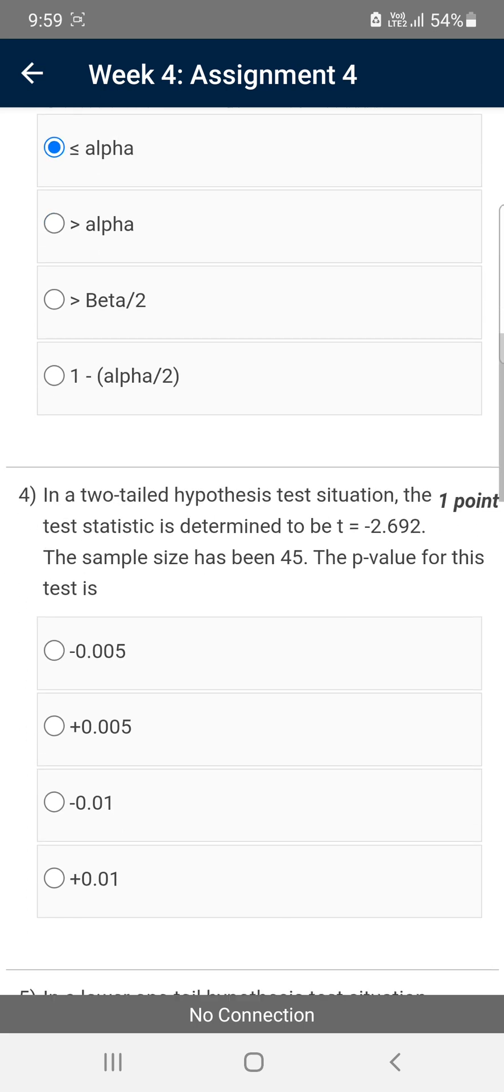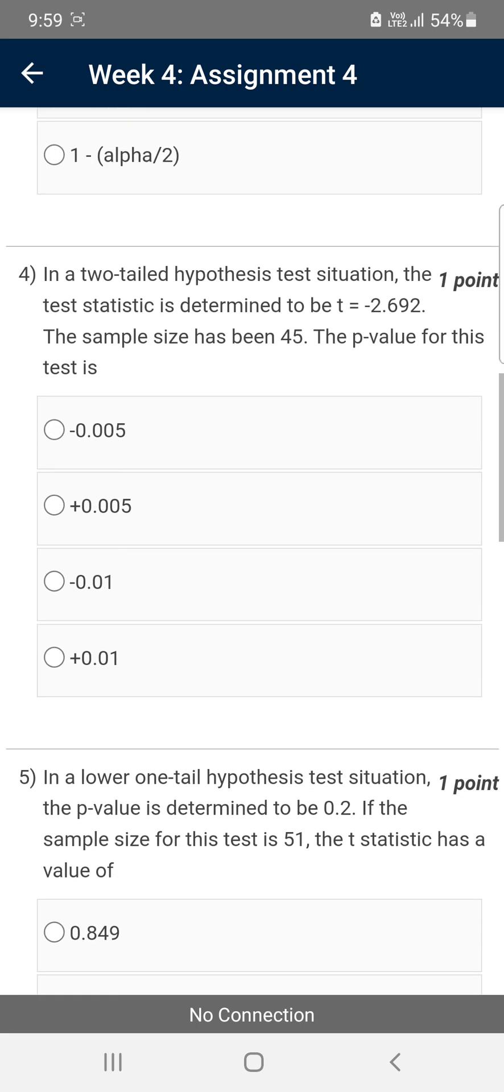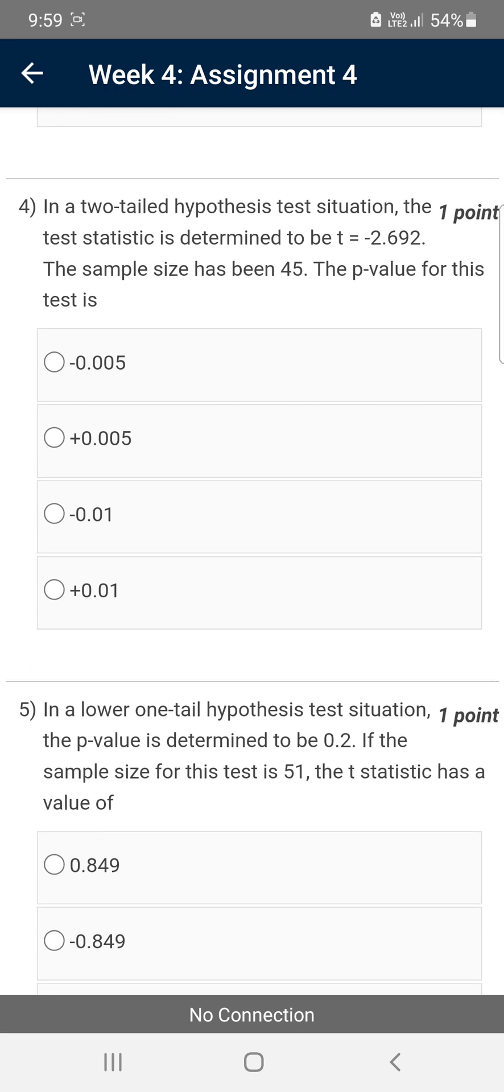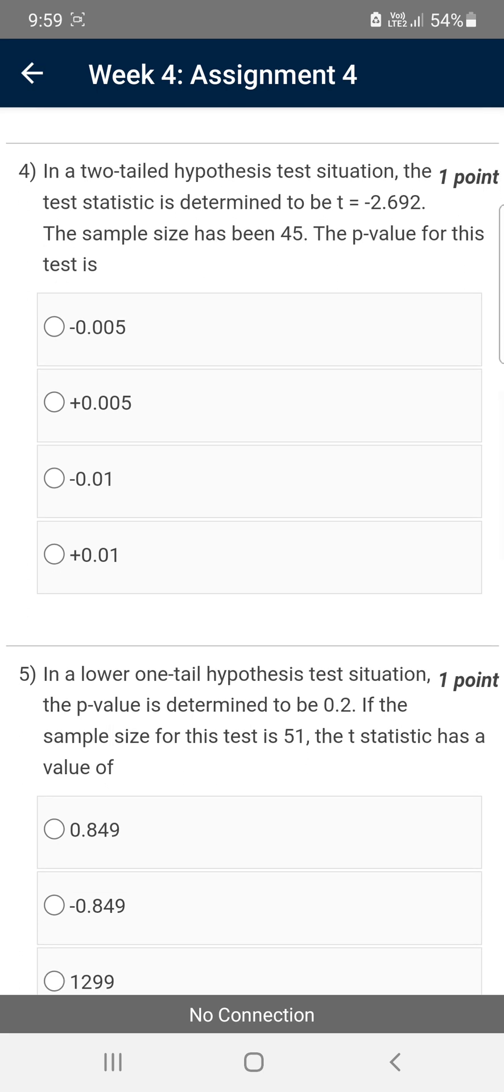Moving on to the fourth question. In a two-tail hypothesis test situation, the test statistic is determined to be t equals minus 2.692. The sample size has been 45. The p-value for this test is—for the fourth question, the solution is fourth option: plus 0.01.